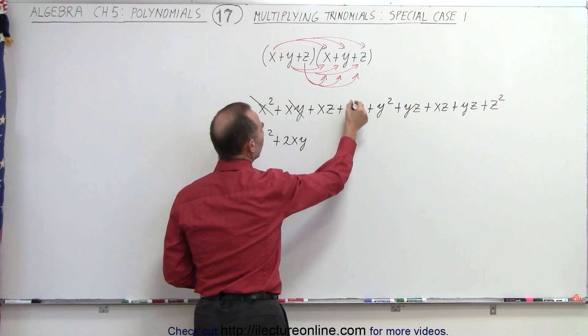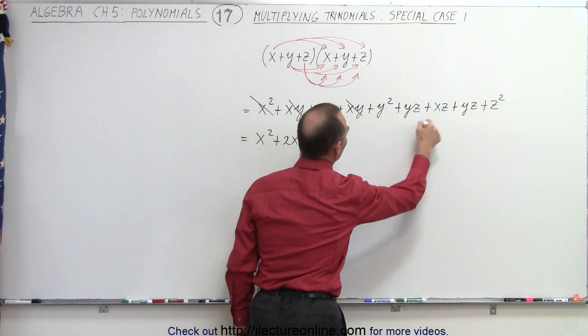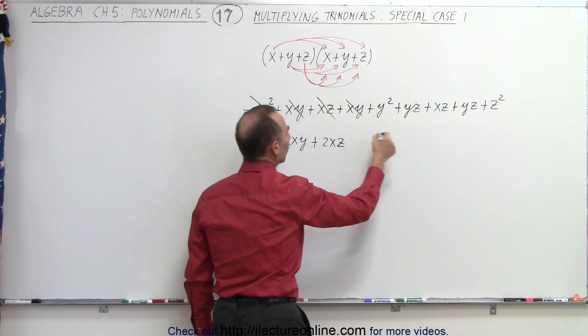Put a line through those, so we don't have to worry about those anymore. We have an x times z and an x times z, that means +2xz. Put the line through those.